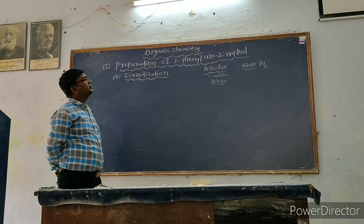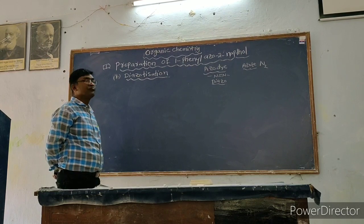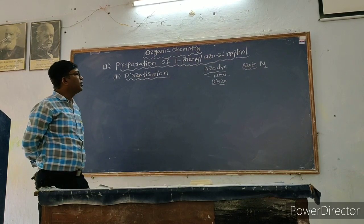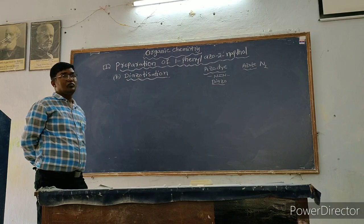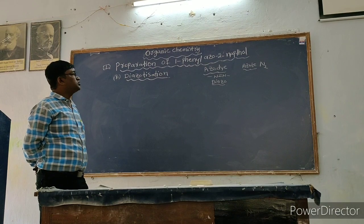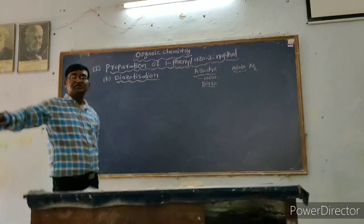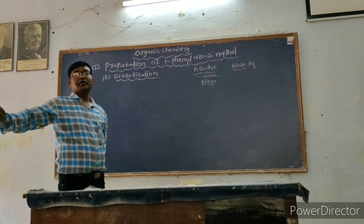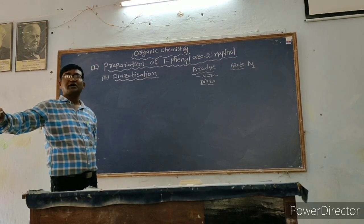Many azo dyes exist. But here in our lab, we have to prepare 1-phenyl azo 2-naphthol. The preparation of this compound involves two steps. The first step is diazotization — the reaction in which the diazonium salt is prepared.